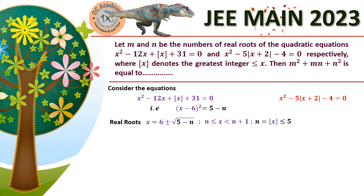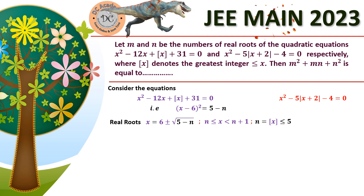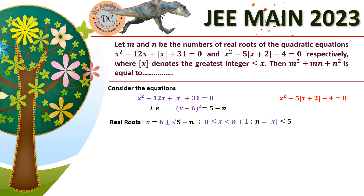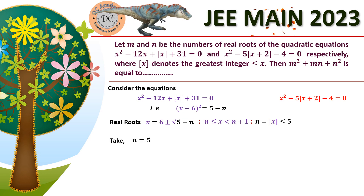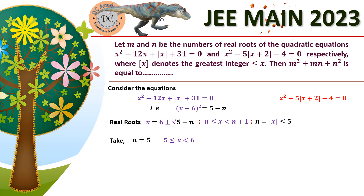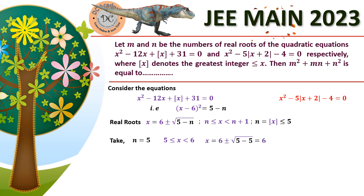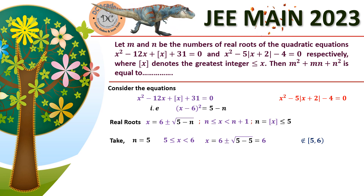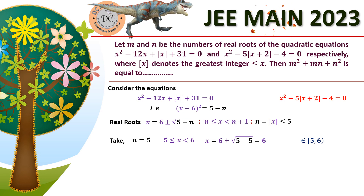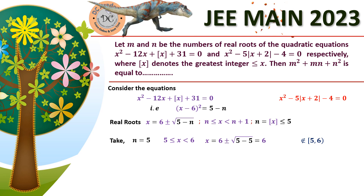For n = 5: x must lie in [5, 6), and substituting gives x = 6, which does not belong to [5, 6) since the right endpoint is open. So this solution is rejected. For n = 4: x must lie in [4, 5), and substituting gives values 7 and 5, which do not belong to [4, 5). For n = 3: again the computed values do not fall in the required interval.